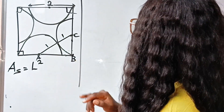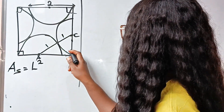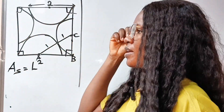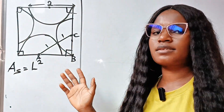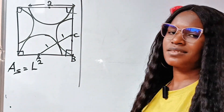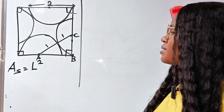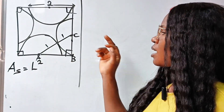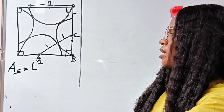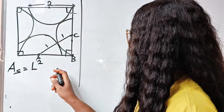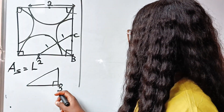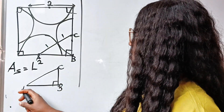Now, I want you to note that this is a right-angle triangle — this is a right angle, this is a right angle, and this is a right angle, being that this is a square. That means triangle ABC is a right-angle triangle. So we have point B here, point C here, and point A here.